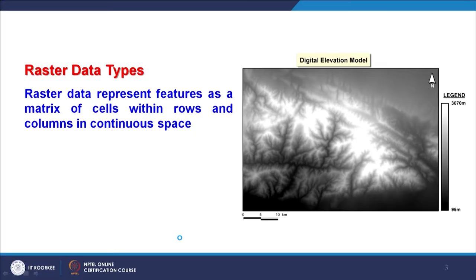The two main types of raster data are grid and image. On the right side, you can see an example of grid data — a digital elevation model, which we will use extensively in later lectures. This is grid data, and it is continuous. In this particular example, the number of rows and columns are not the same, so the overall shape of the raster is rectangular, but the data is continuous.